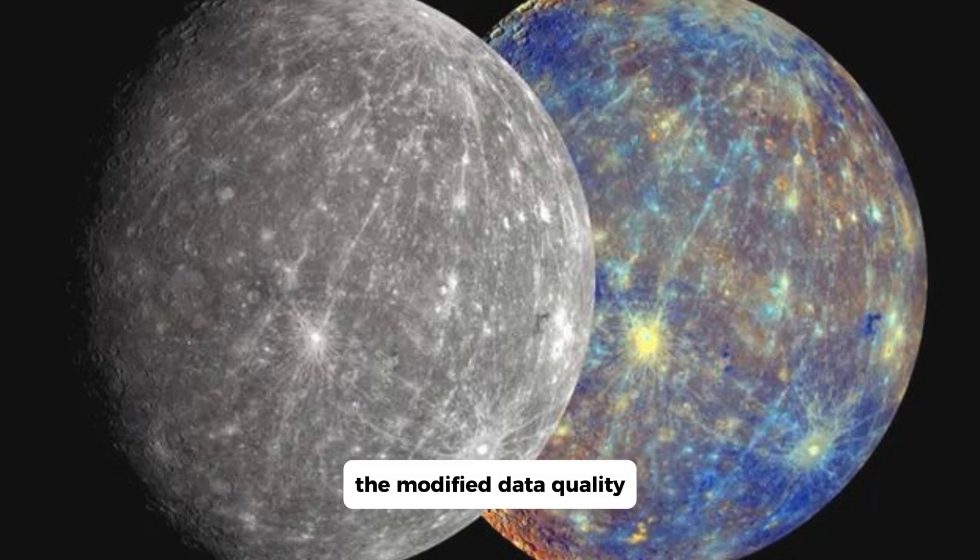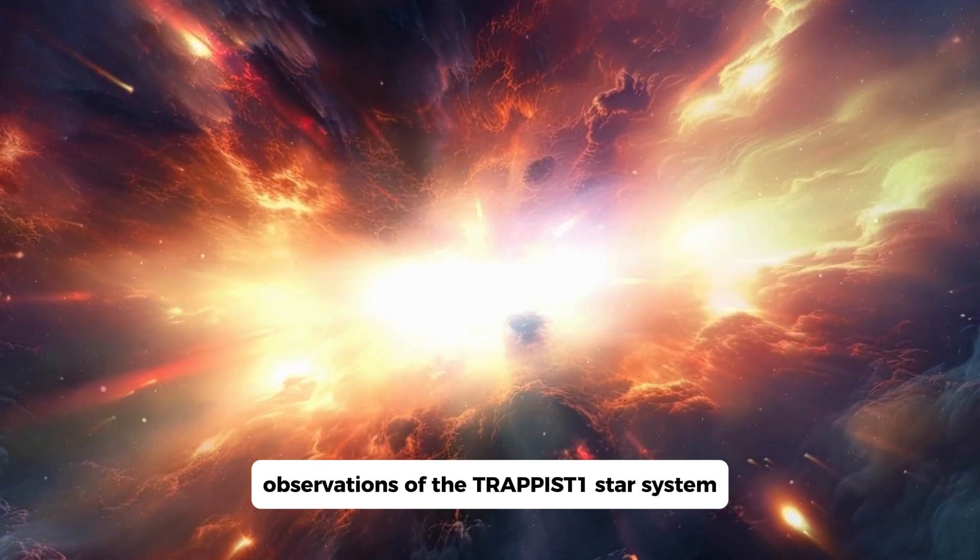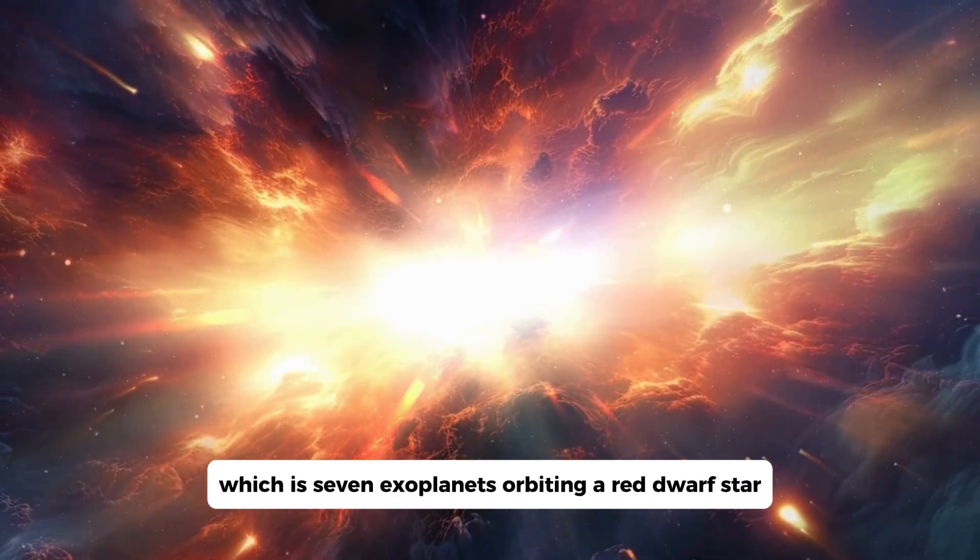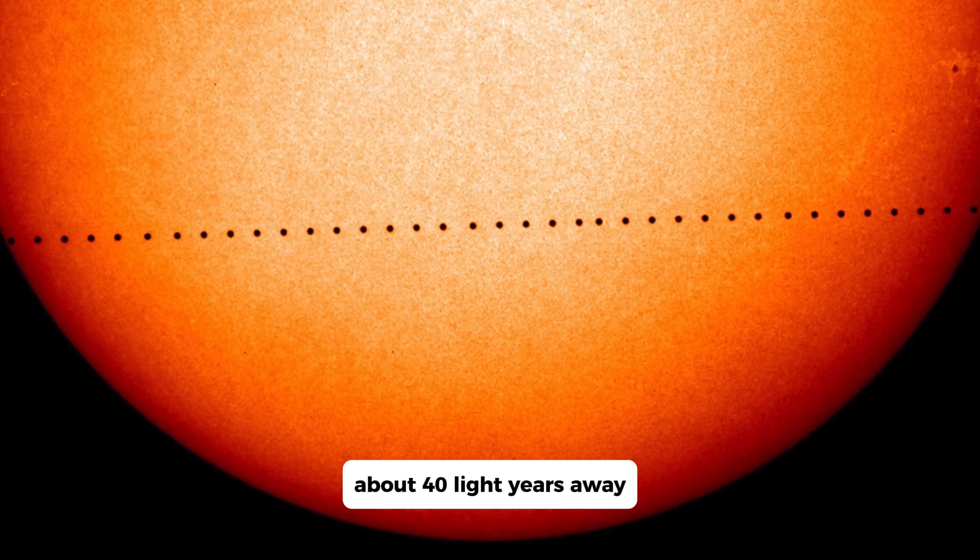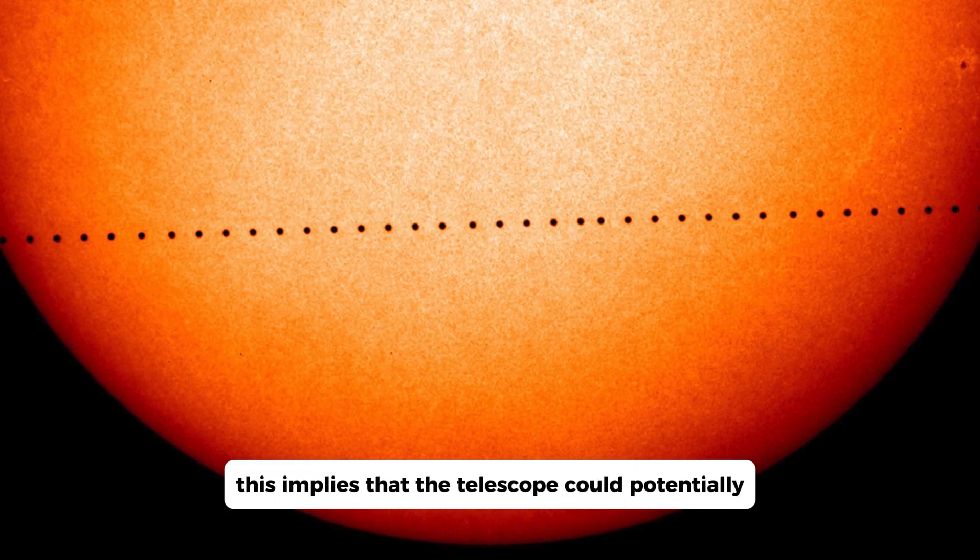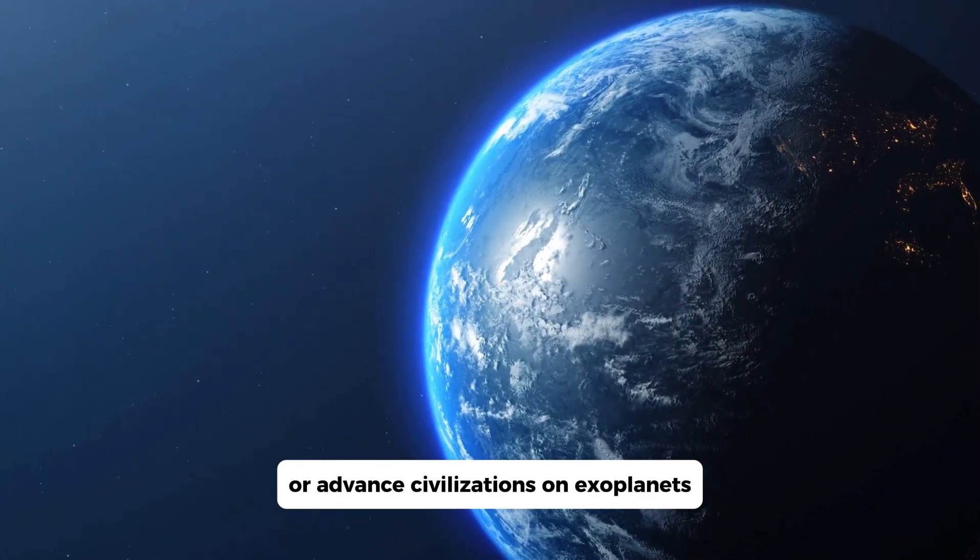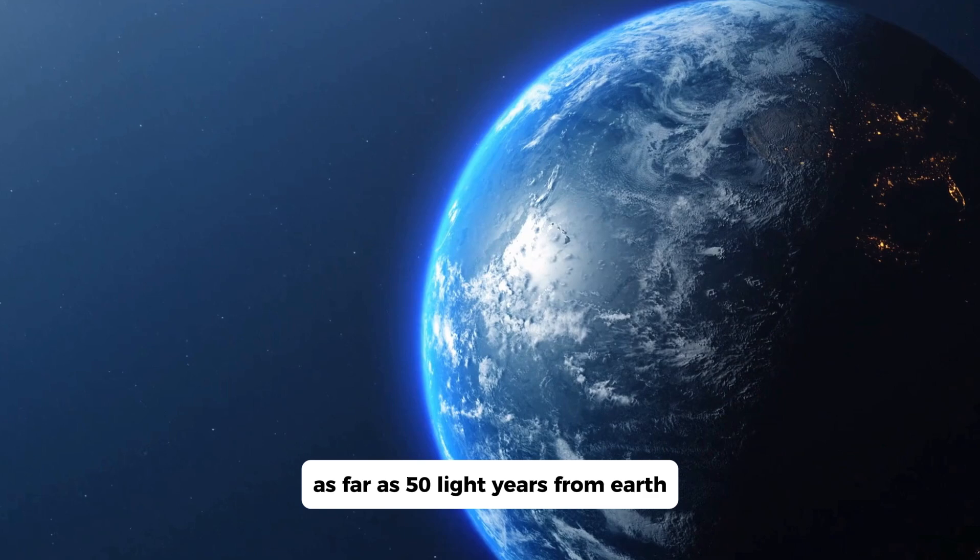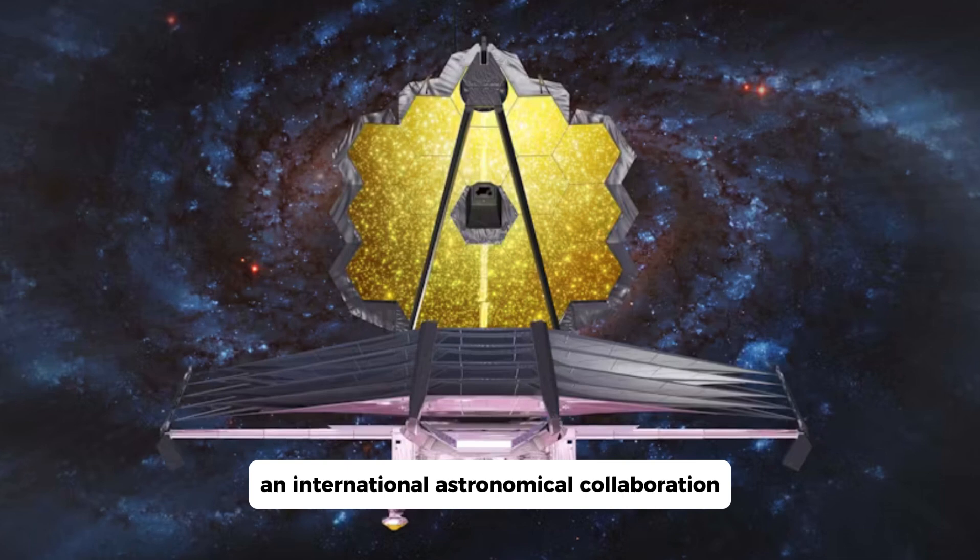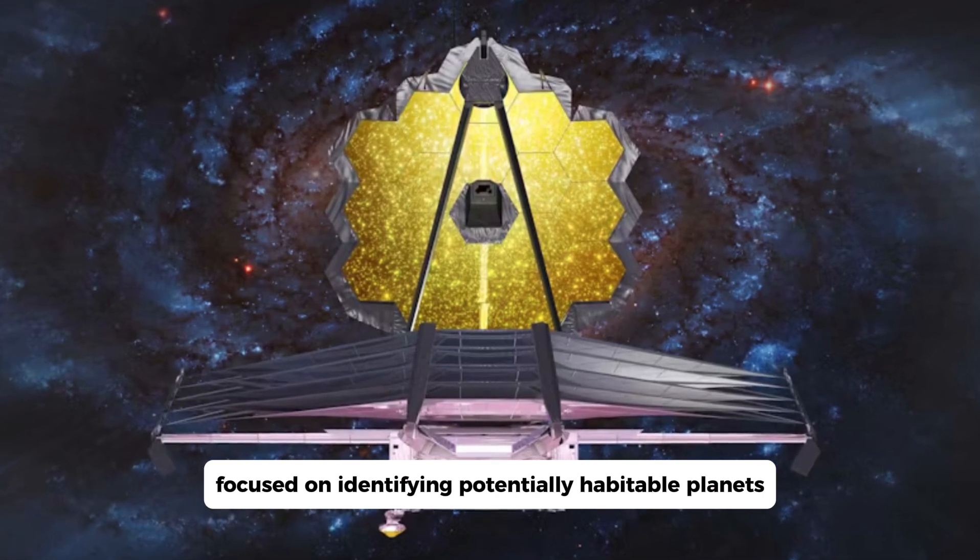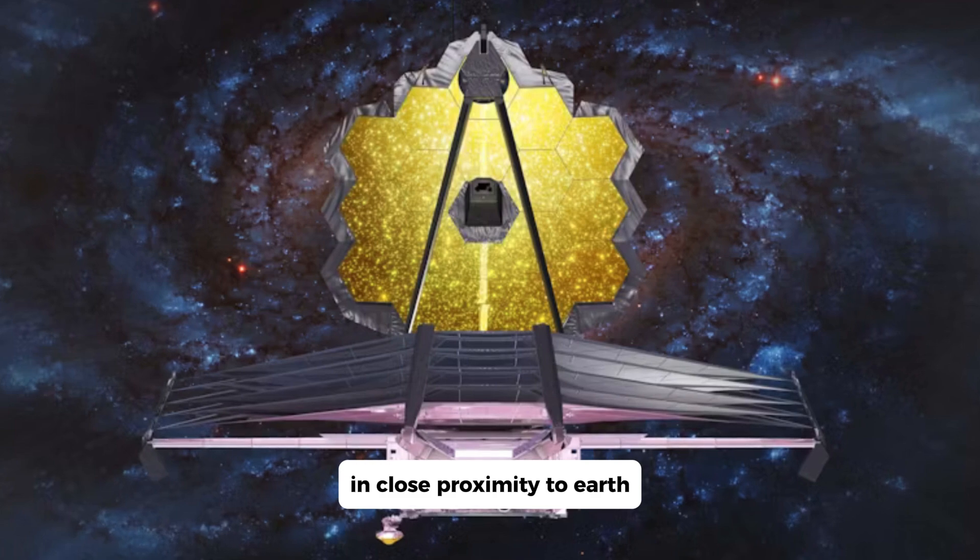The modified data quality was comparable to JWST's observations of the TRAPPIST-1 star system, which has seven exoplanets orbiting a red dwarf star about 40 light-years away. This implies that the telescope could potentially detect signs of life or advanced civilizations on exoplanets as far as 50 light-years from Earth. The study is part of Project Eden, an international astronomical collaboration focused on identifying potentially habitable planets in close proximity to Earth.